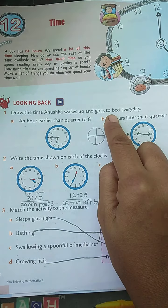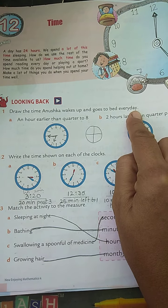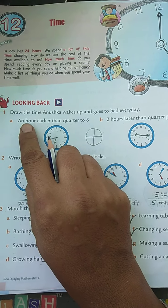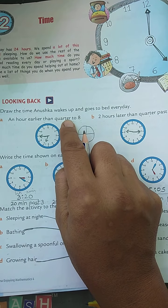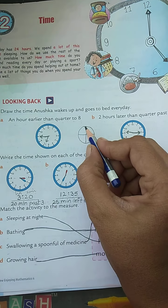Time Anushka wakes up and goes to bed every day. Okay, in that, number A is an hour earlier than quarter to eight. Means first you have to see what is quarter. See children, I have already explained, again I am explaining: when you are making four parts of a circle, this is called quarter, means one fourth part.